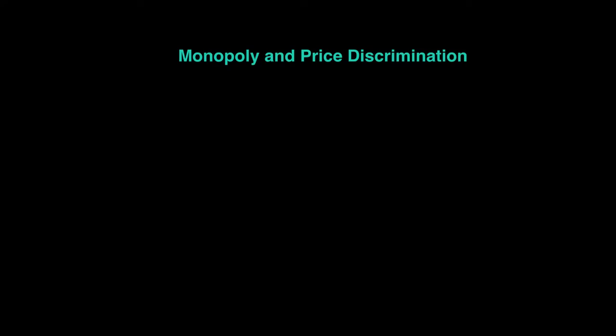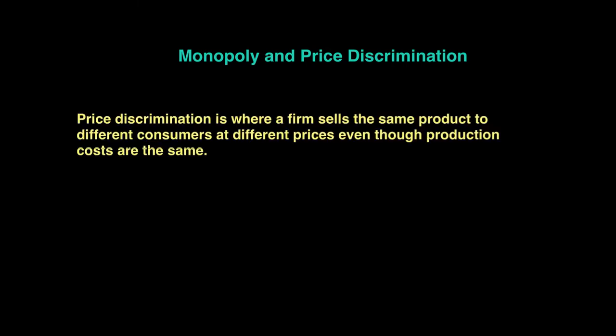We saw that monopoly is a price setter which means it has significant market power to set its own price. One of the things that we see in monopoly is the behavior of price discrimination. Price discrimination is where a firm sells the same product to different consumers at different prices, even though production costs are the same.